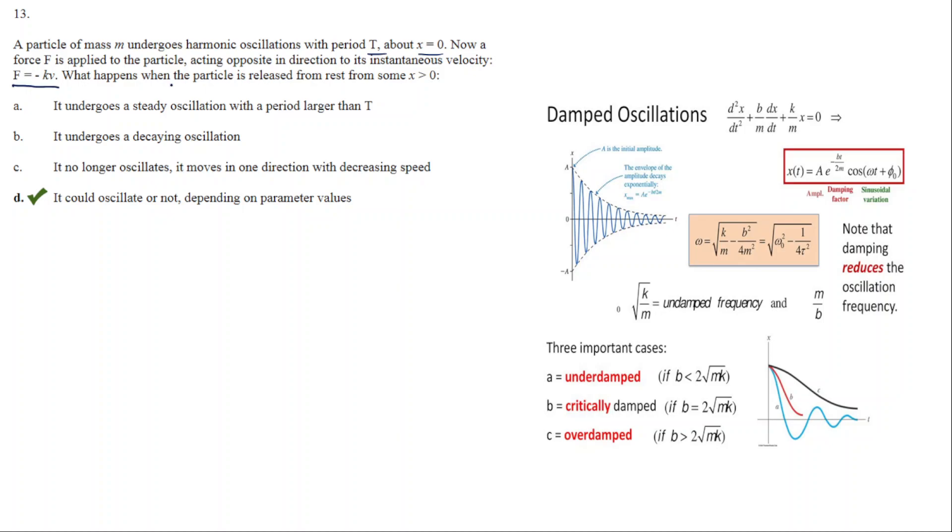The force is F = -kv. What happens when the particle is released from rest from some x greater than zero? This is basically a case of damped oscillation, and here is the equation for damped oscillation.